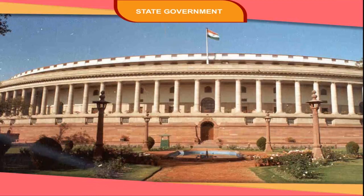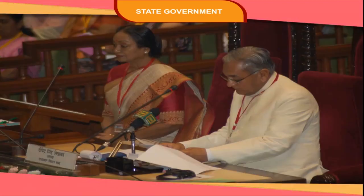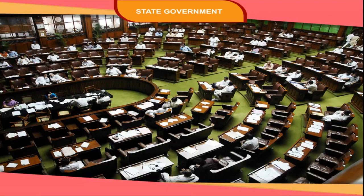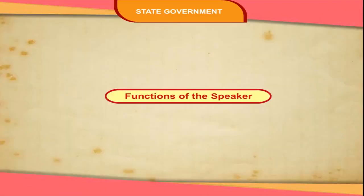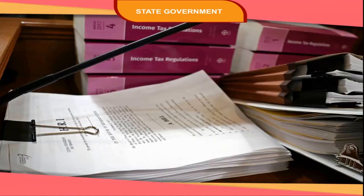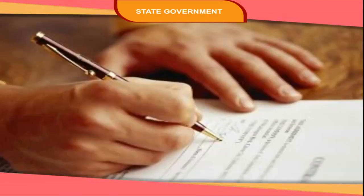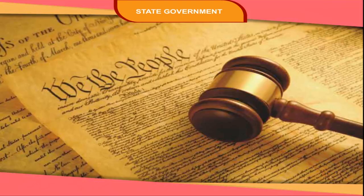The Vidhan Sabha elects the Speaker and Deputy Speaker, who perform the same functions as the Speaker and Deputy Speaker in Lok Sabha. They are elected by the members of the Assembly from amongst themselves and hold office till the new Assembly elects a new Speaker and Deputy Speaker. They can be removed from office earlier by a resolution passed by the House. The Speaker decides whether a bill is a money bill or an ordinary bill, and no bill or resolution can be passed without his permission. He maintains discipline in the House and sees that the House functions according to the rules.